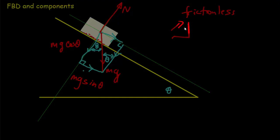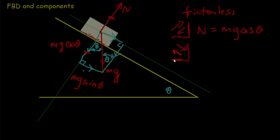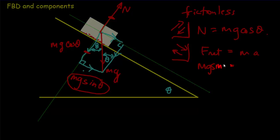Analyzing the perpendicular direction: the block doesn't lift off or go into the ramp, so there's no net force in that normal direction. Therefore the normal force N equals mg cosine theta. Along the ramp, there is acceleration, so applying Newton's second law: the net force is mg sine theta — nothing cancels it with no friction — so mg sine theta equals ma. The masses cancel, giving acceleration a equals g sine theta. This is like dropping objects, just down a ramp instead of straight down.